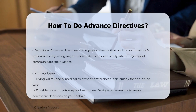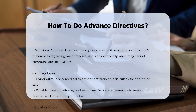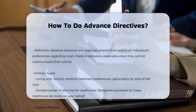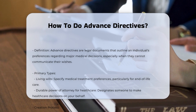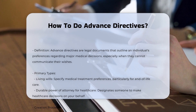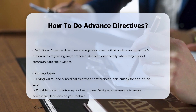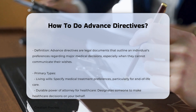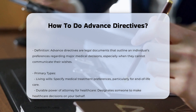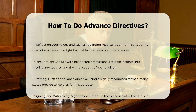Advanced directives are legal documents that allow individuals to outline their health care preferences. These documents become essential when a person cannot communicate their wishes. There are two primary types of advanced directives: living wills and durable powers of attorney for health care. A living will specifies medical treatment preferences, while a durable power of attorney designates someone to make health care decisions on your behalf.